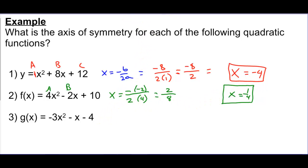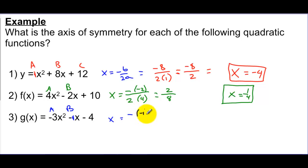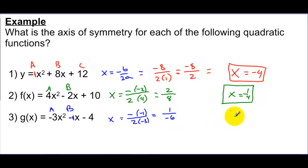For the last one, my b value — there is a 1 there — so b is negative 1, and a is negative 3. When I plug in, it looks like negative negative 1 over 2 times negative 3. The top becomes positive 1, and the bottom becomes negative 6. So the axis of symmetry for this one is 1 over negative 6, or negative 1/6.